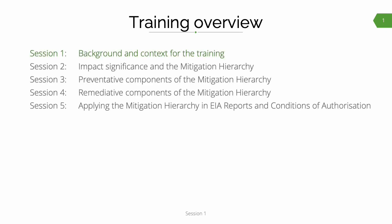The training has been broken down into five separate sessions, each recording approximately 15 to 25 minutes long. Session one, that's this session, will provide the background and context for the training. Session two will focus on the relationship between impact significance and the mitigation hierarchy. Sessions three and four will cover the steps in the hierarchy itself, starting with the preventative component and then the remediative component. Finally, session five will talk to how the mitigation hierarchy ought to be applied in EIA reports — the EIRs and the EMPRs — as well as the conditions of authorization.